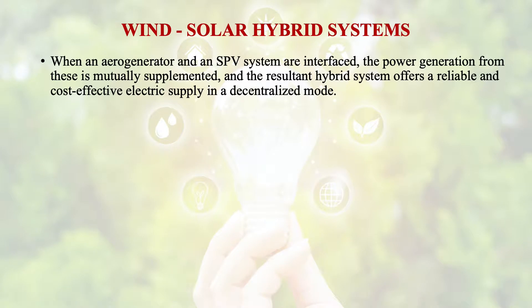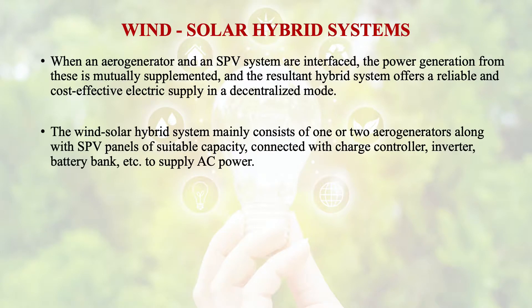Then comes the wind-solar hybrid systems. When an aerogenerator and a solar photovoltaic system are interfaced, the power generation from these is mutually supplemented, and hence they are called a hybrid system. These systems are more reliable and more cost effective in terms of electric supply in a decentralized mode. The wind-solar hybrid system mainly consists of one or two aerogenerators along with solar photovoltaic panels of suitable capacity, connected with either a charge controller, inverter, battery bank, etc., to supply AC power.